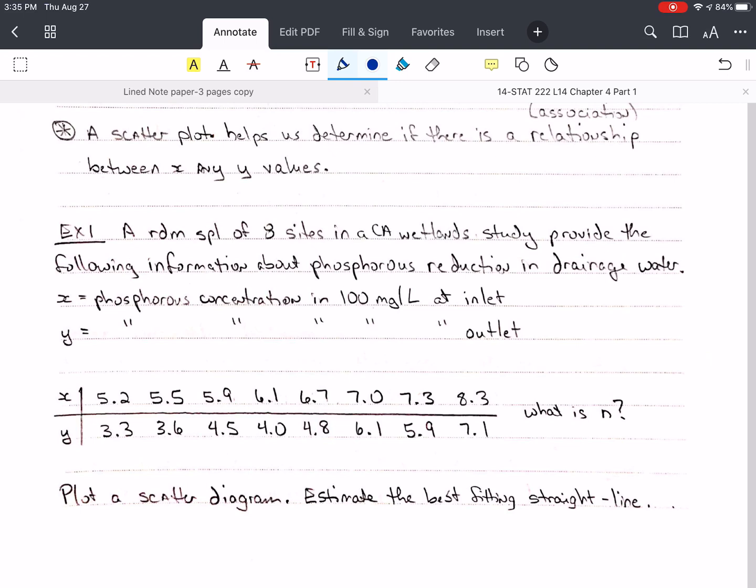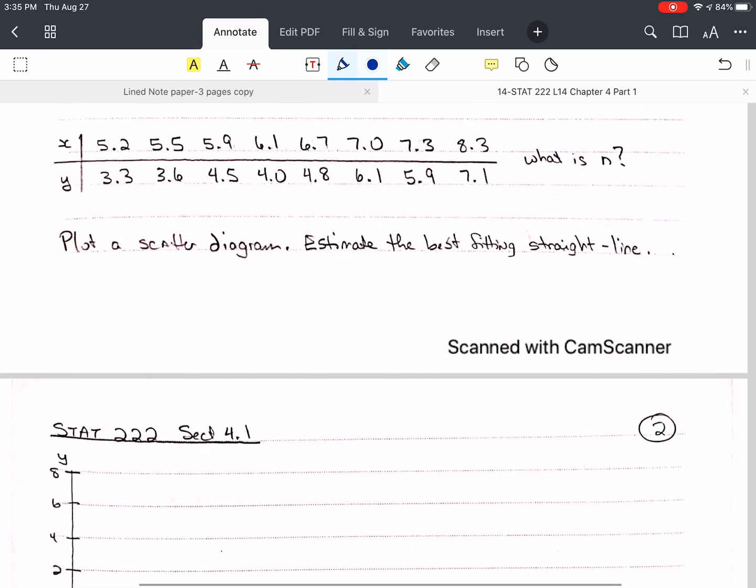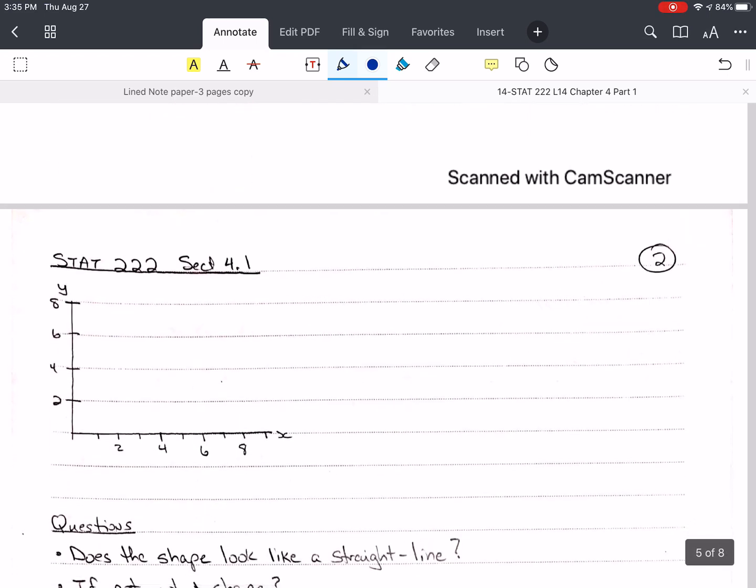Here's an example. It's a random sample of eight sites in California wetlands. This study provides information about phosphorus reduction in drainage water. X is the phosphorus concentration in 100 milligram per liter at the inlet of a biotech facility that's cleaning the water. The water going in, that concentration of phosphorus is given by X, and the water that comes out after it's been cleaned is the Y value. We want to plot a scatter diagram and estimate the best fitting line. A computer is usually used to fit the best fitting line, and we'll calculate how to do that in the next section.